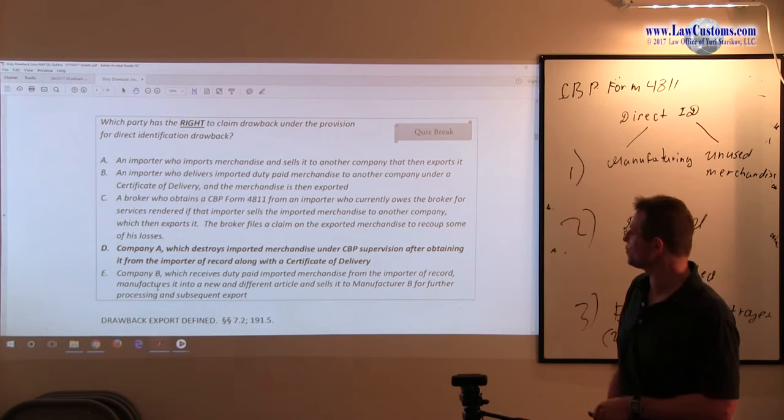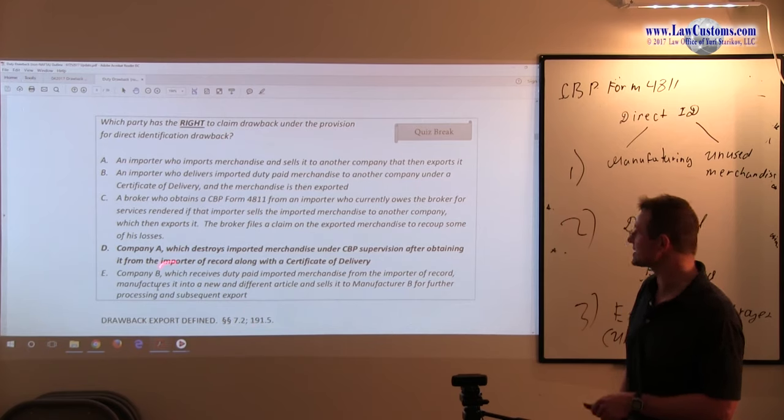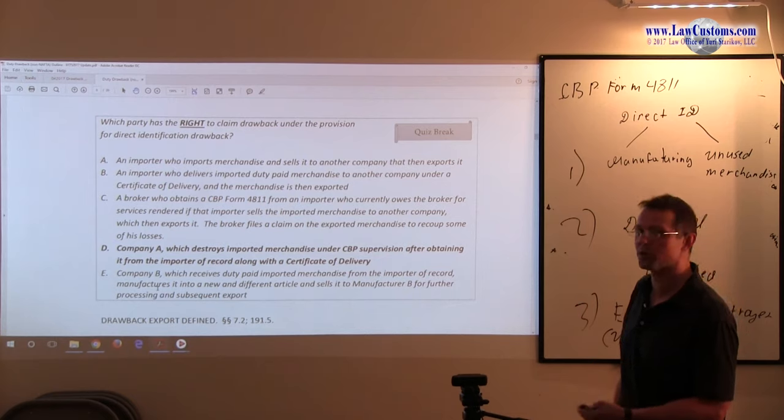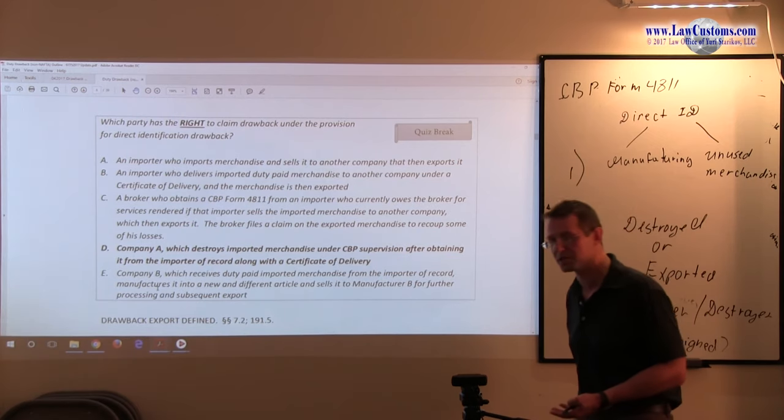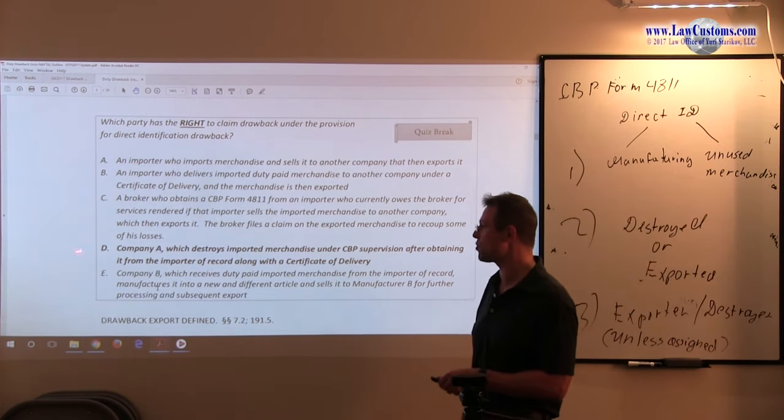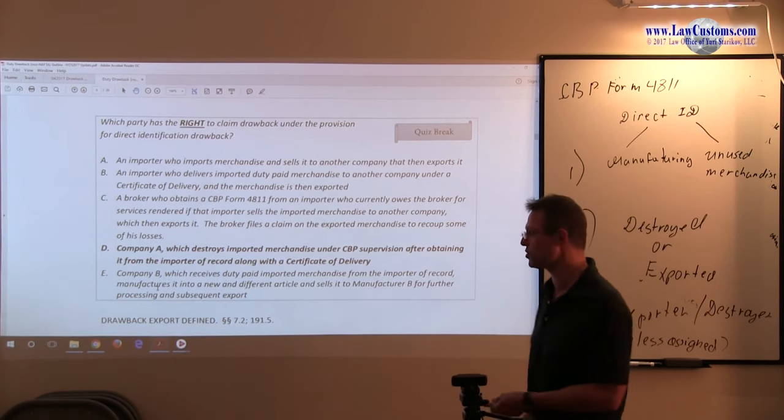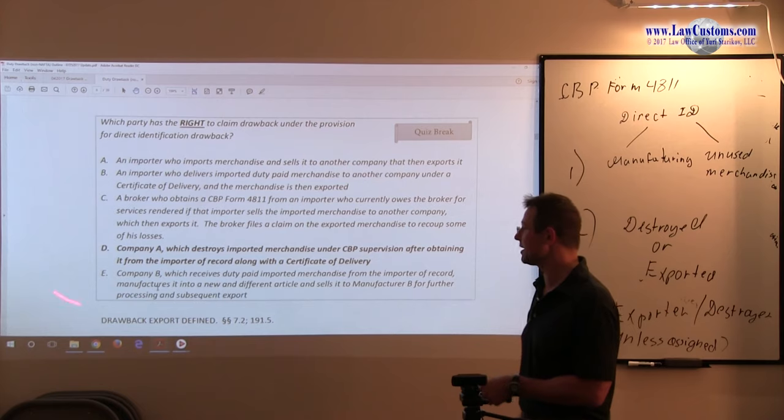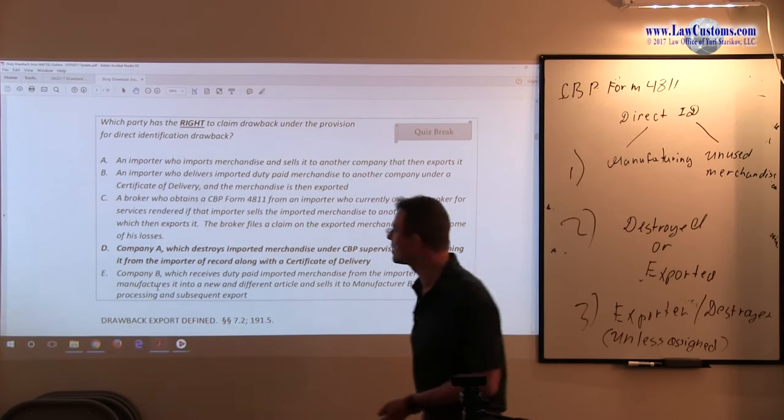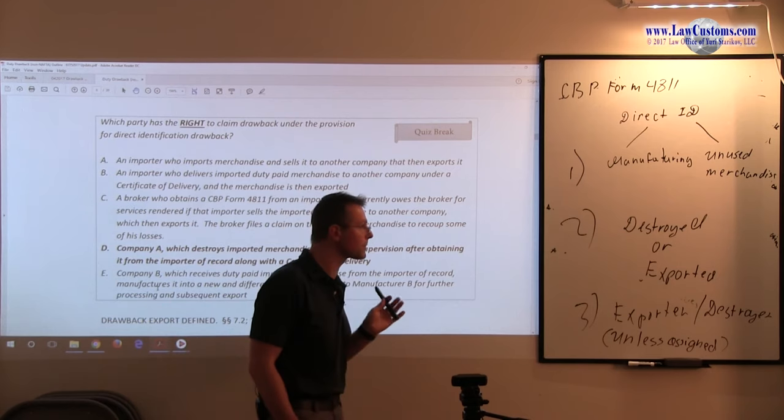That party is the default party entitled to claim because it's acting as exporter. Company B, unlike manufacturer B, is in the middle—it didn't act as importer and didn't act as exporter. There's no evidence it received authorization or assignment to claim drawback, which is a necessary prerequisite because Company B is not the exporting party and not the destroying party, making E an incorrect answer choice.